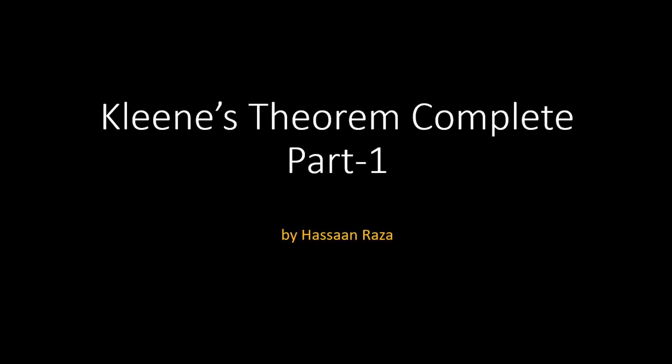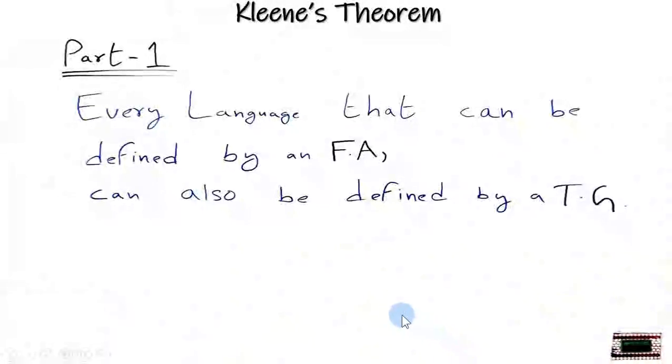The title of the video is Kleene's theorem complete part 1. Part 1 of Kleene's theorem says that every language that can be defined by an FA can also be defined by a TG. This means that basically FA is a diagrammatical representation of the regular expression and TG is an advanced form of FA.